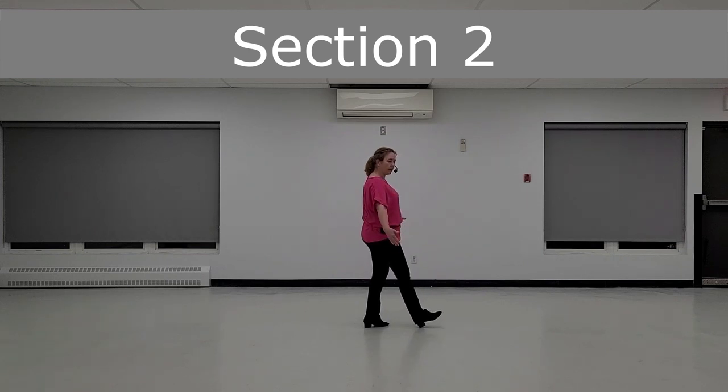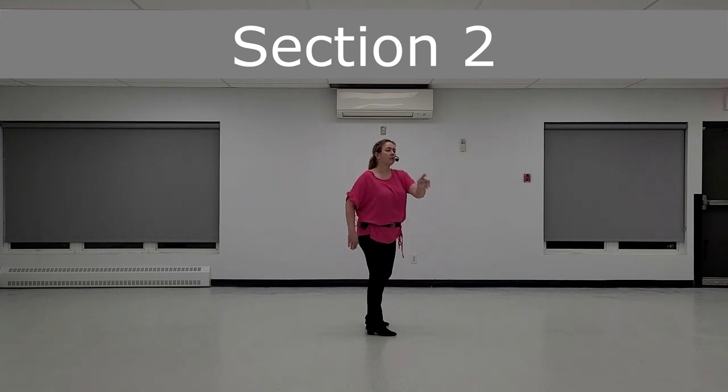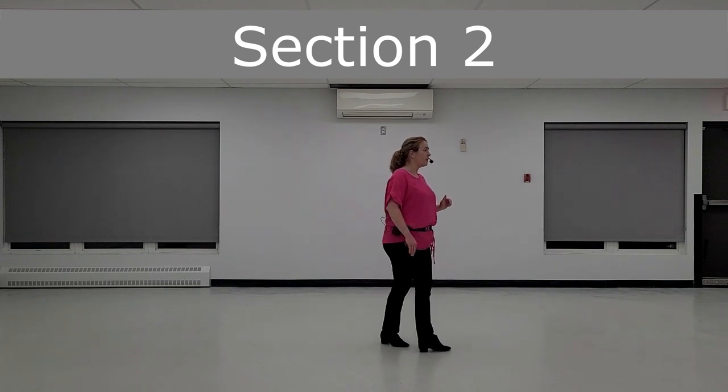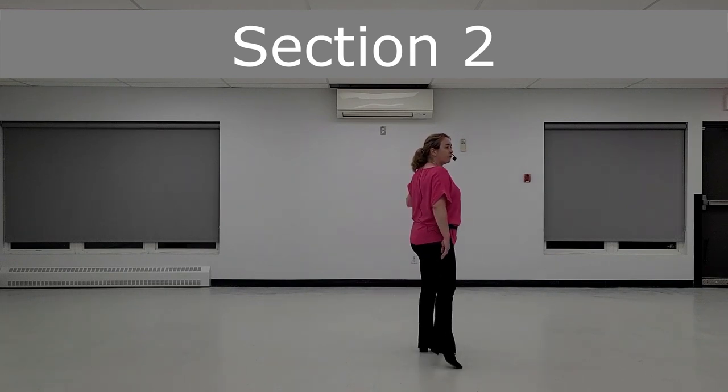And going to the side with your right foot for five. Then you will cross and cross for the count of six and seven, pointing the right foot over for the count of eight. This is the second section.